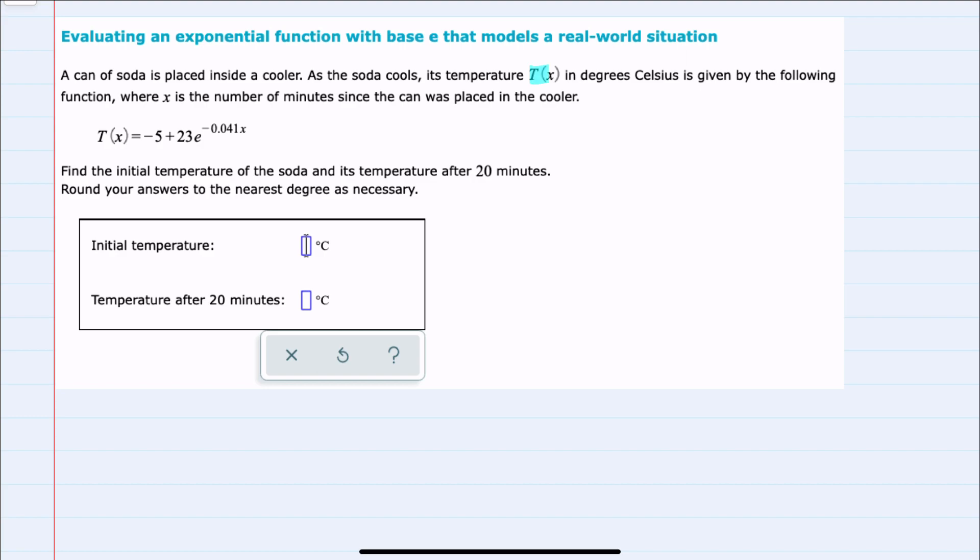Here we're given the function T of x, which is a function for temperature in degrees Celsius for a can of soda that's been placed in a cooler. Our variable x is the minutes since the can was placed in the cooler, and we're asked for two values here.